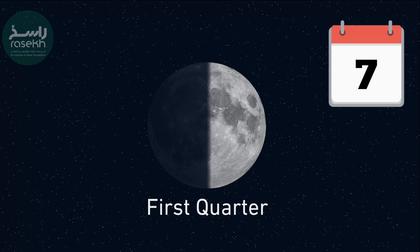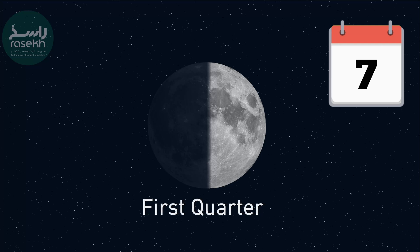First Quarter: About a week after the new moon, the moon's disk appears half illuminated. This is because the moon is now at a 90 degree angle relative to the Earth and sun, allowing us to see 50% of the sunlit portion.